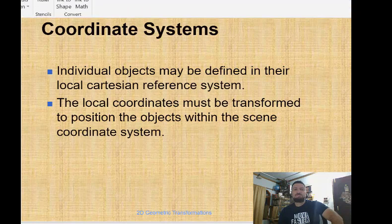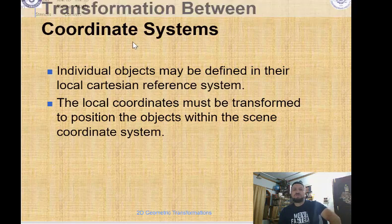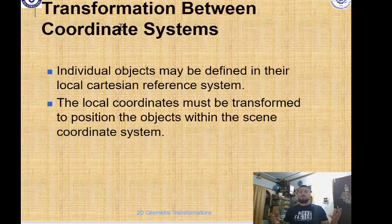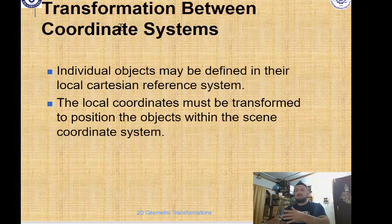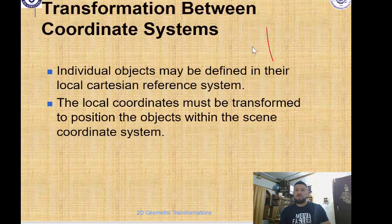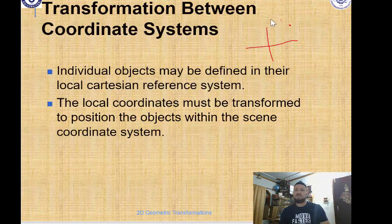Today we talk about the coordinate system and transformation between coordinate systems. We have a lot of coordinate systems — for example, an object has its own coordinate system which may not lie on our screen. Our screen has its own coordinate system, and we have to transform from the object's coordinate system to match our screen's coordinate system.